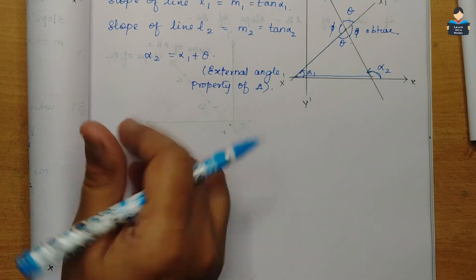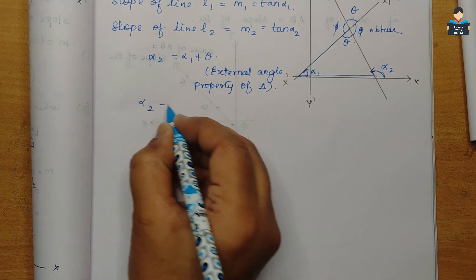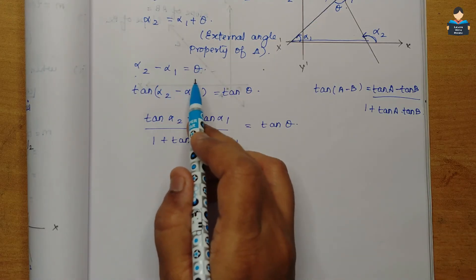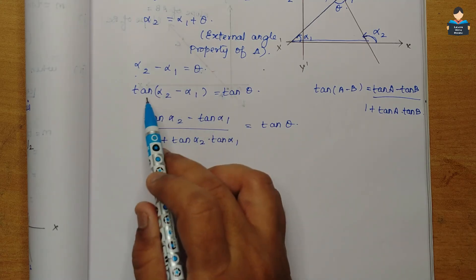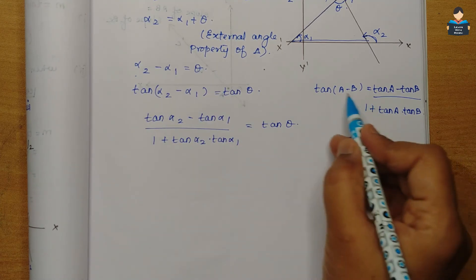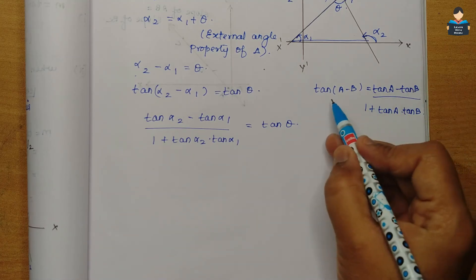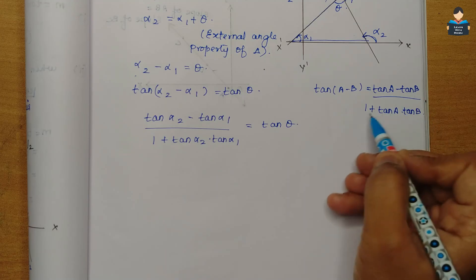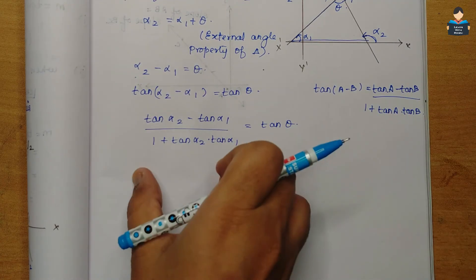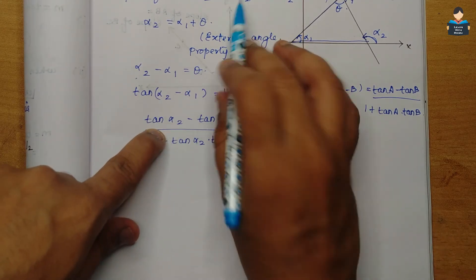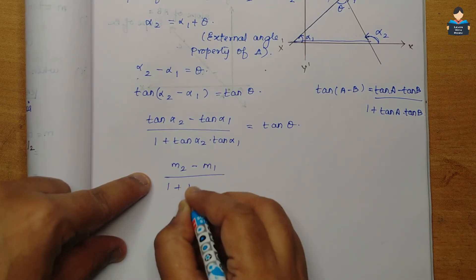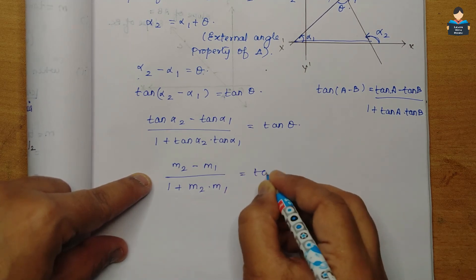Applying the formula, tan theta equals tan alpha2 minus tan alpha1 over 1 plus tan alpha2 times tan alpha1, which equals M2 minus M1 over 1 plus M2 times M1. This is the formula for tan theta, the angle between two lines.